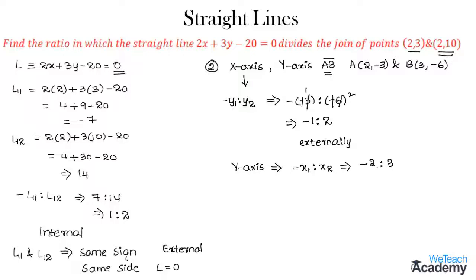Here we get the ratio as minus 2 to 3, that is nothing but minus L11 to L12 less than 0. So we can say that this division is also an external division.